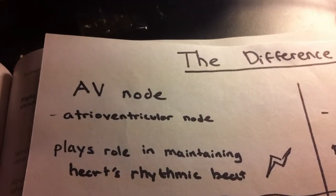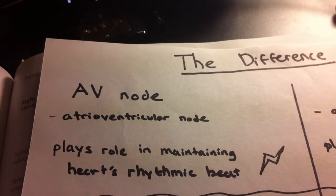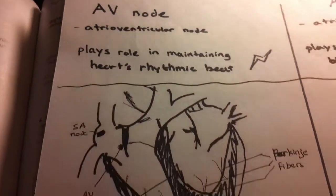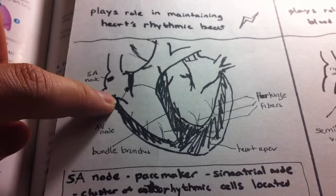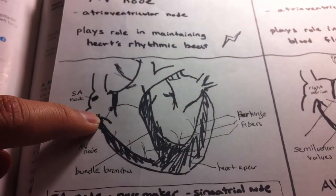The AV node is called the atrioventricular node and it plays a role in maintaining the heart's rhythmic beats. So here's an illustration of the heart. The AV node is actually right here next to the valve, but it's not the key player here.